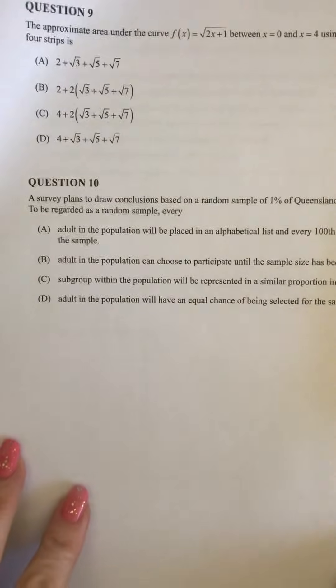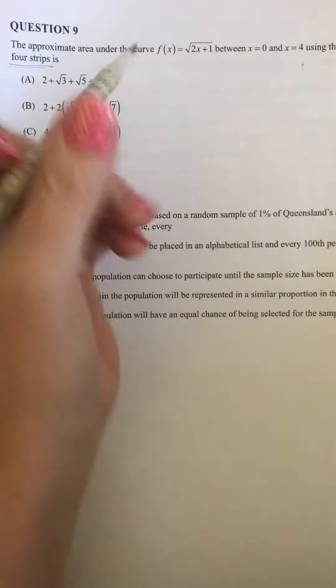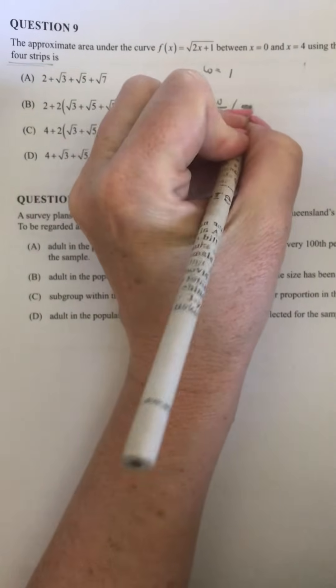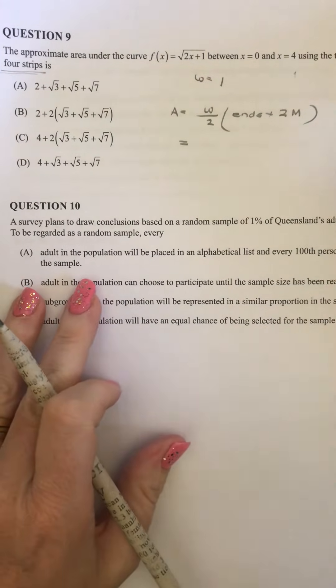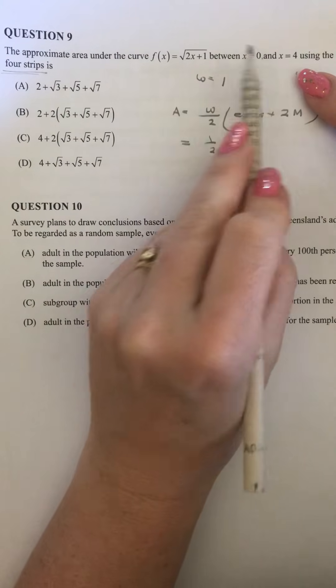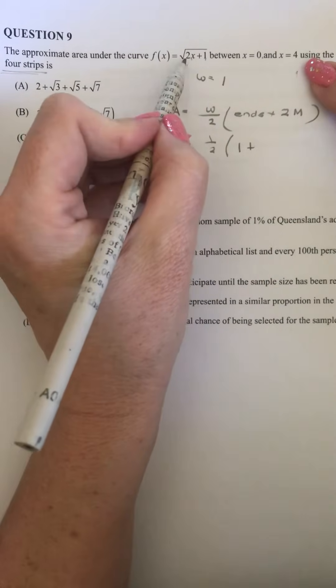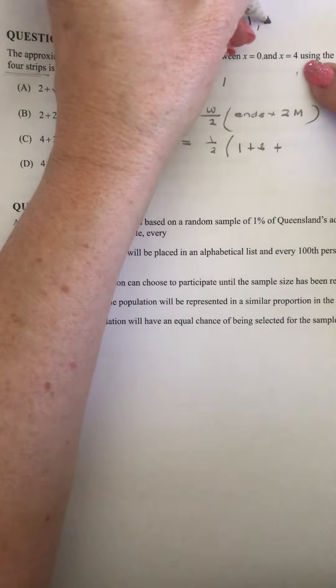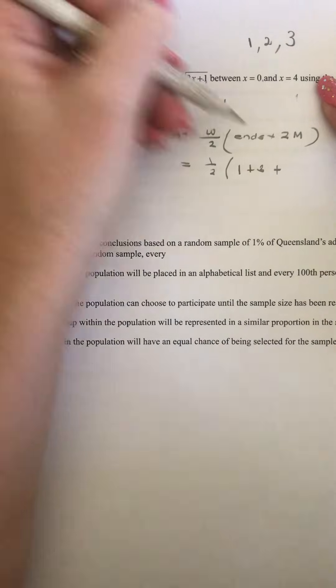Now for question 9, we're looking at the trapezoidal rule. So it tells us four strips. It's between 0 and 4. So that means the width is going to be 1. And we know that the area is equal to the width over 2 of the ends plus 2 times the middles. A simplified version of the rule that I like to use. So I've got 1 over 2. And then I want to work out what the ends will be. So when I sub in 0, 2 times 0 is 0 plus 1 is 1. And I want the square root of that, which is 1. Then if I put in a 4, 2 times 4 is 8 plus 1 is 9. The square root of that is 3. And then the middles are going to be when I'm subbing in 1, 2 and 3 into that. So if I sub in 1, I've got 2 times 1 is 2 plus 1 is 3. So I've got the square root of 3.